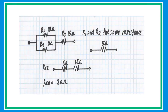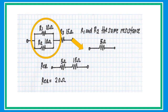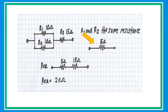Here's another example. R1 is 10 ohms, R2 is 10 ohms, and R3 is 15 ohms. Notice that two resistors are connected in parallel — just get half of their value to get a 5-ohm equivalent resistance. Then redraw the circuit and add R3, which is 15 ohms, to get a total equivalent resistance of 20 ohms.